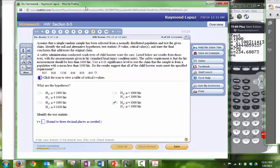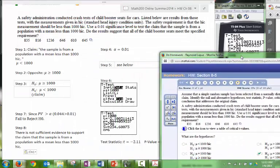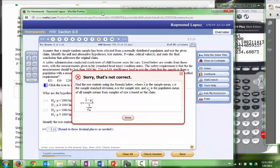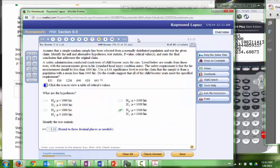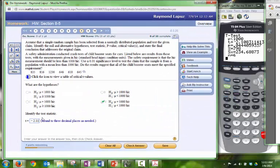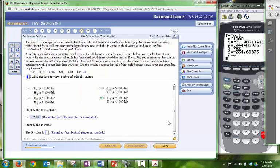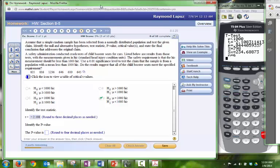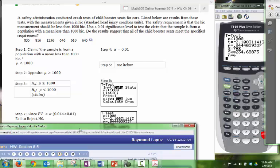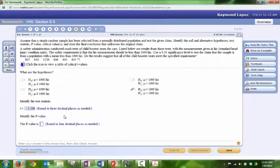Our test statistic. We found our test statistic to be negative 2.11. Round it off to two decimal places. We want three decimal places. Let's try that again. 2.108. And then our p-value. Round off to four decimal places. Our p-value is .044. That should probably be good enough.